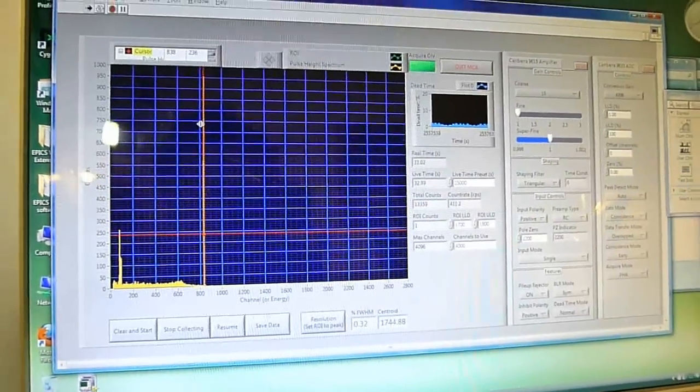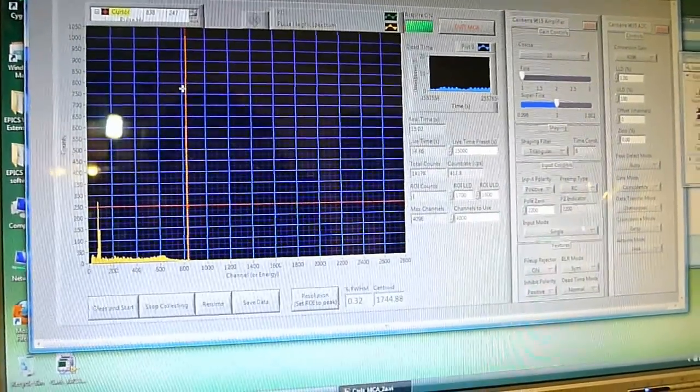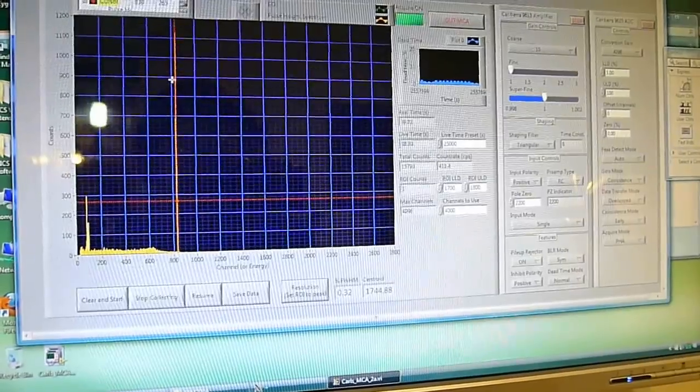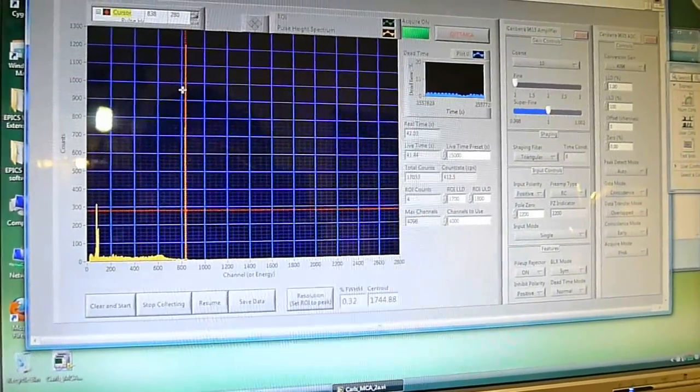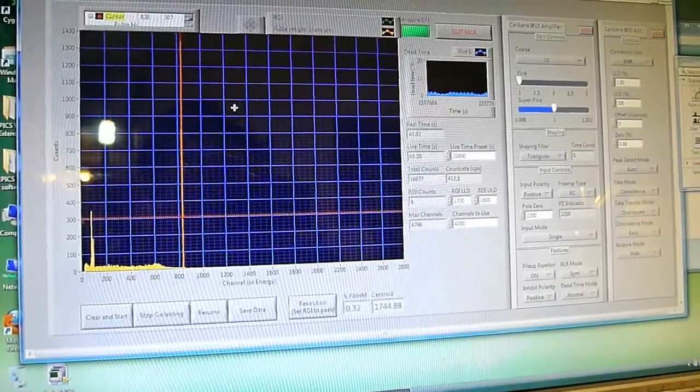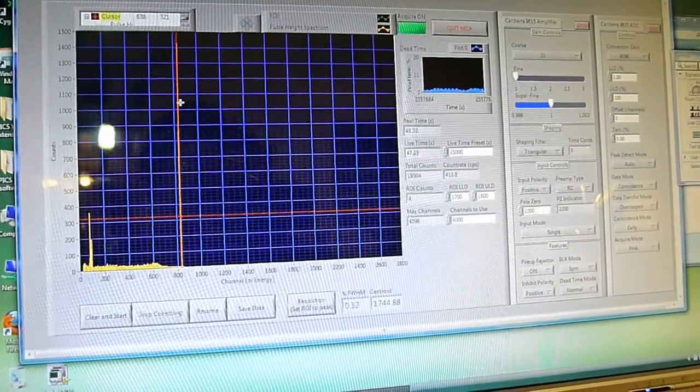And that source in there is five millicuries of polonium. So it's rather warm. Something like ten times that much was used to kill a dude in Britain by the Russians. So it's a lot of polonium, and that's what accounts for that gamma ray.